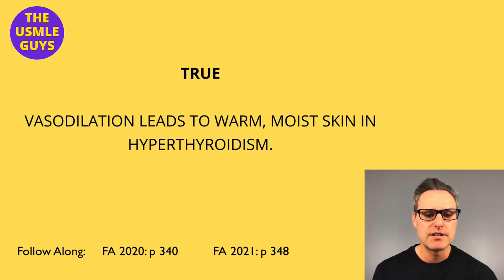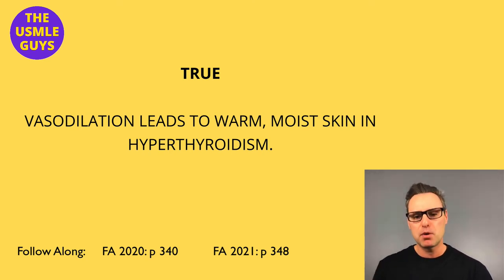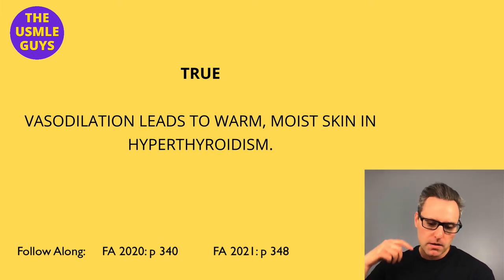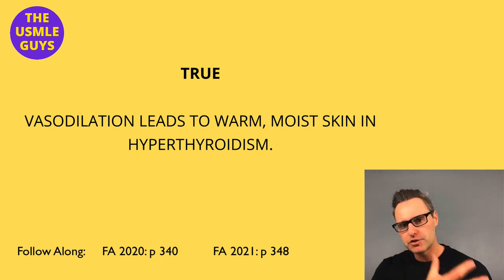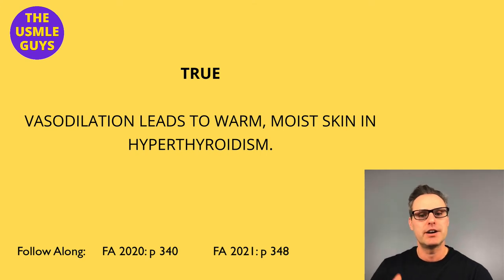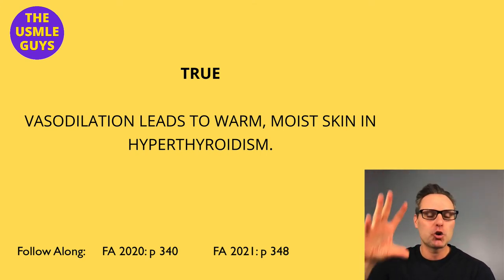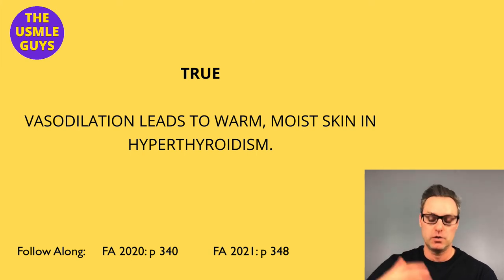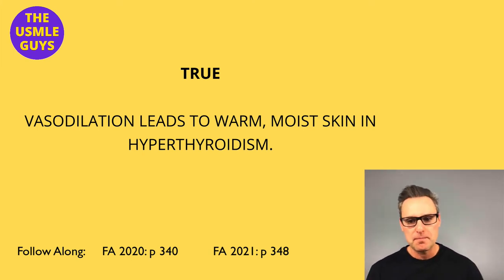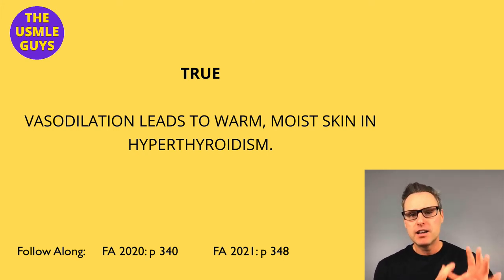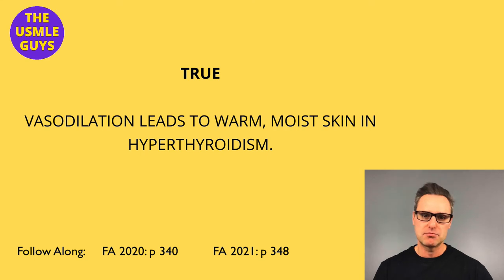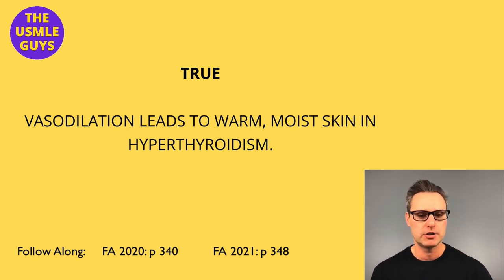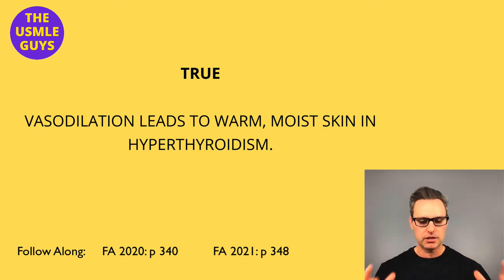Hypothyroidism can slow down the heart, decreasing cardiac output and causing dyspnea on exertion. Hyperthyroidism can cause tachycardia, palpitations, dyspnea, arrhythmia, chest pain, and hypertension. If labs are given in a vignette, in hypothyroidism T3 and T4 are low, and TSH will be elevated as compensation. In hyperthyroidism, there's too much T3/T4, so the hypothalamus slows down TRH and TSH from the pituitary decreases.